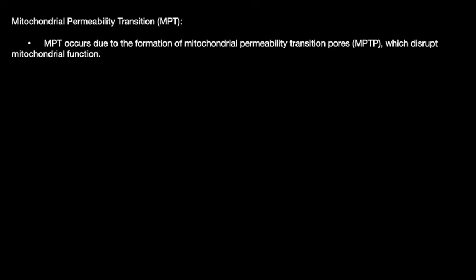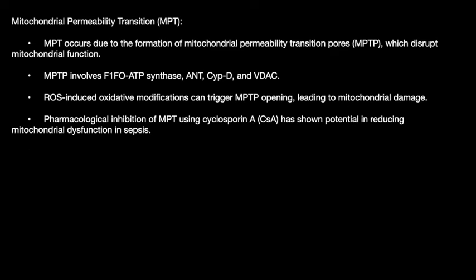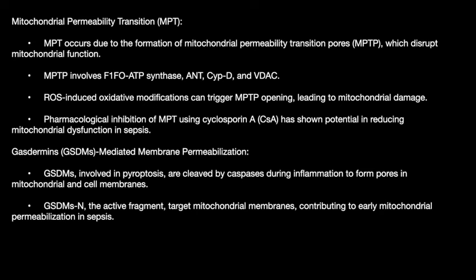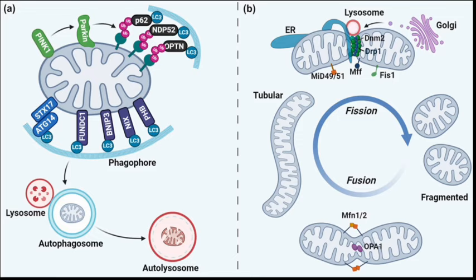There is also mitochondrial permeability transition (MPT). MPT occurs due to the formation of mitochondrial permeability transition pores, which disrupt mitochondrial function. The main mechanism involves oxidative damage to enzymes. Pharmaceutical inhibition of MPT using cyclosporine A has shown potential in reducing mitochondrial dysfunction in sepsis. Additionally, gasdermin (GSDM)-mediated membrane permeabilization involves pyroptosis, where caspases are cleaved during inflammation to form pores in the mitochondria and cell membrane. Active gasdermin fragments target mitochondrial membranes and contribute to mitochondrial permeability in sepsis, preferentially binding to cardiolipin on the outer mitochondrial membrane, which externalizes during oxidative stress.